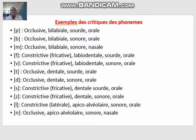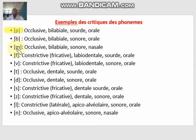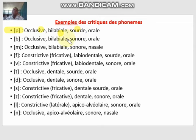Now let's see how we can describe each sound phonetically using some examples. Let's start with 'p.' For 'p': the lieu d'articulation is bilabial because the two lips are involved. The mode articulatoire is occlusif — there is a complete blockage of air and it comes out as an explosion. There is no vibration in my vocal cords for 'p,' so it is sourd. Only the mouth is used to produce the sound, so it is oral — not nasal. That's the full description of 'p.'